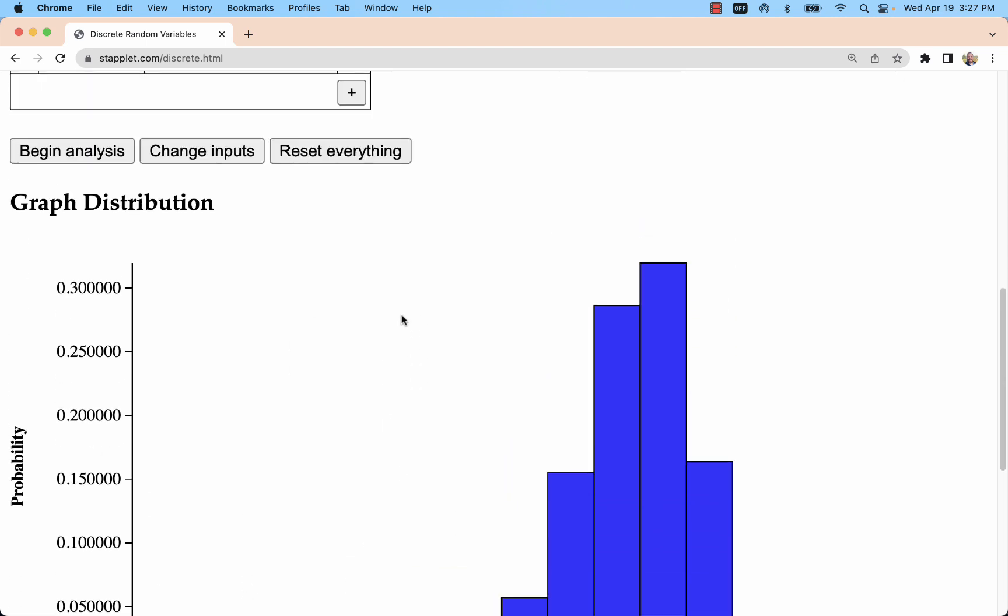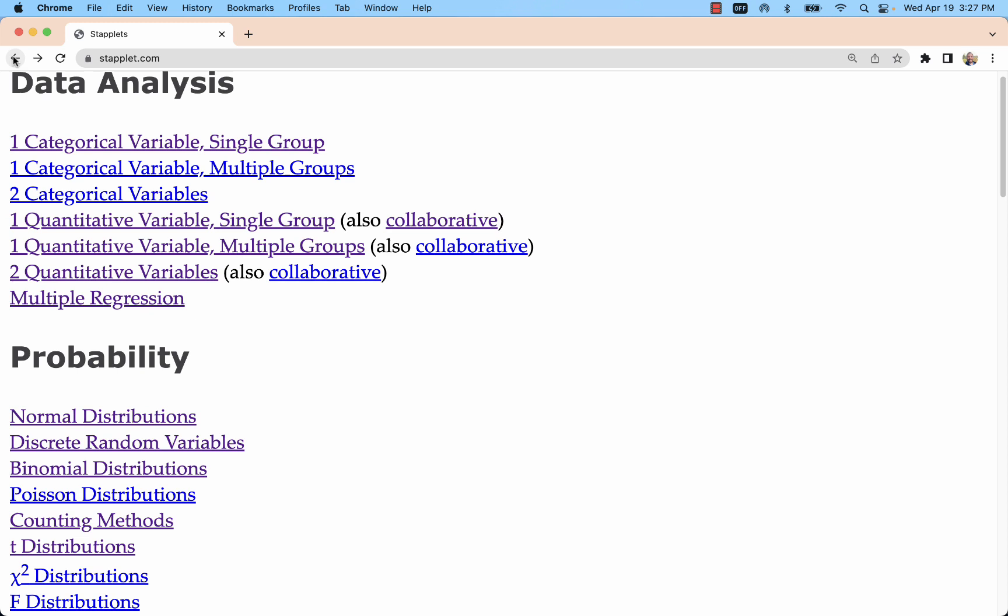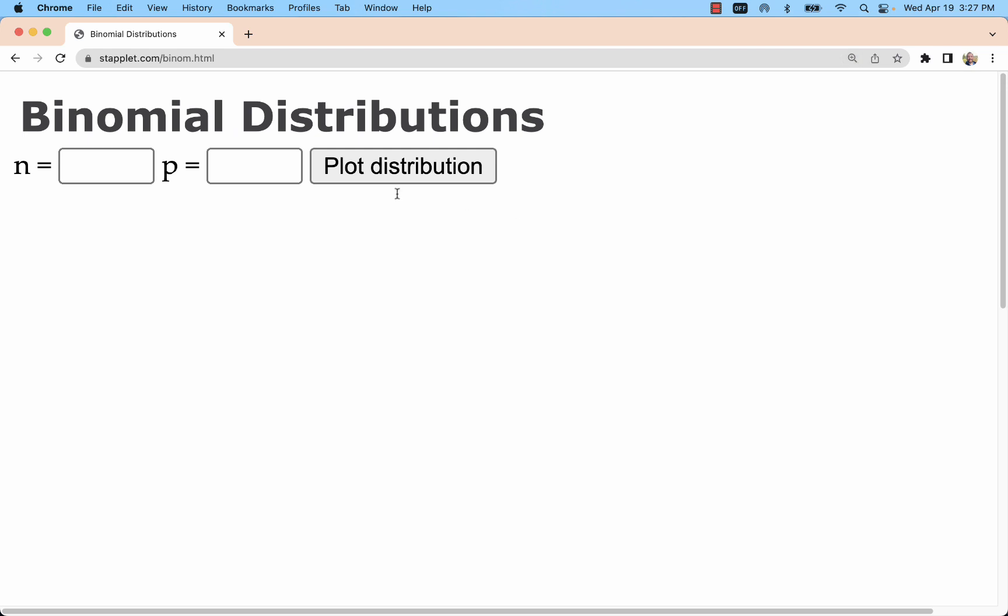Now I'm going to recreate this entire table and graph, looking at it as a binomial distribution. Anytime we meet the requirements of binomial distributions, we can use this applet. And all we need is N and P. The requirements for binomial distributions: we need to have independent sampling from a large population or independent by sampling with replacement. We need to have a fixed probability. We need to have this random number of successes. And we have all those things here.